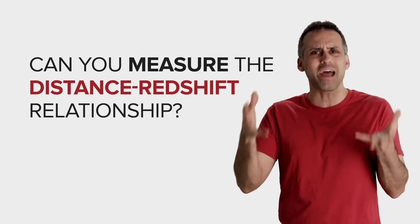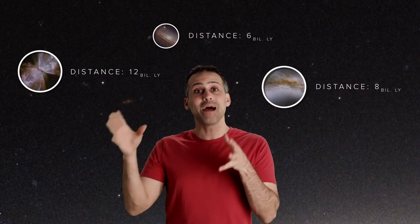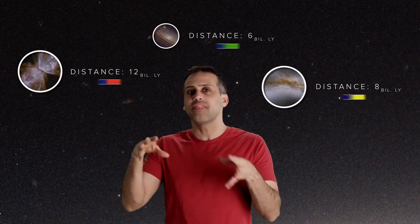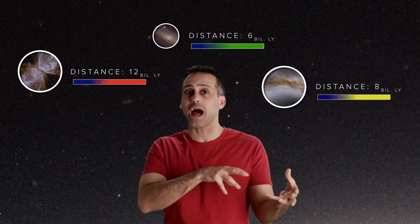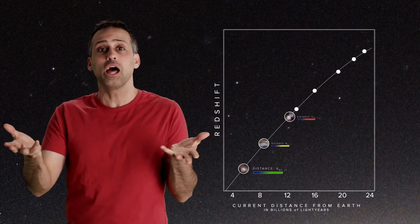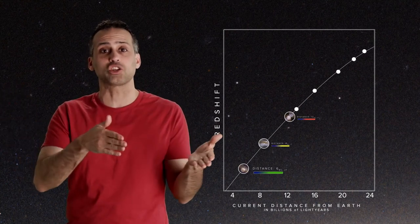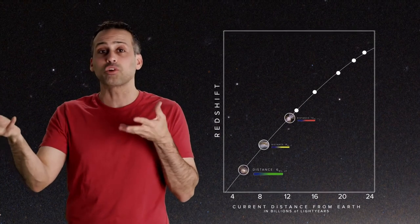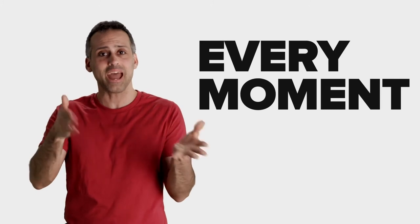So can you do this? Can you measure the distance redshift relationship? No sweat. Just find a bunch of faraway galaxies, much further than Andromeda. Measure their distances and their redshifts. Then put those distances and redshifts on a graph and find the best fit curve. Voila, you now know the distance redshift relationship, and from that, how fast the universe was expanding at every moment ever.